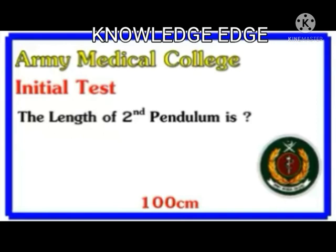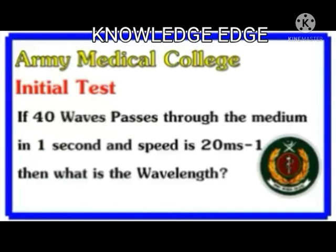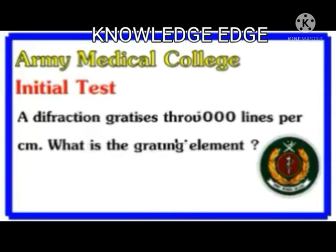If 40 waves pass through the medium in one second and speed is 20 meters per second, then what is the wavelength? Calculate the wavelength — the answer is 100 centimeters.